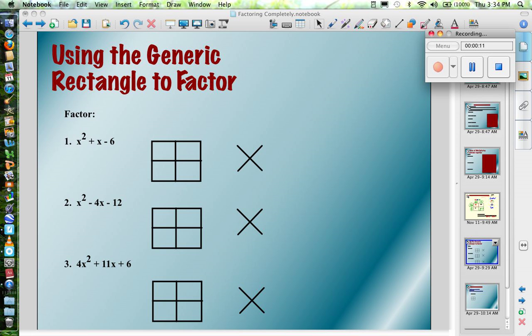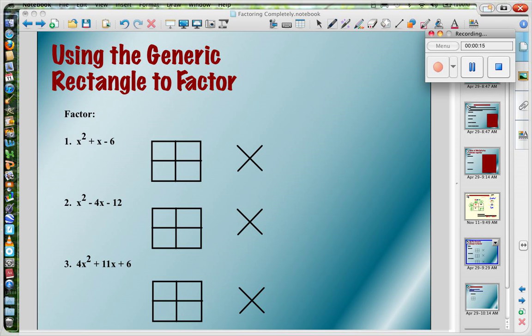my goal is to come up with two binomial factors together. So first term goes in the first box, last term goes in the last box, and my middle term is my product. So that's 1x. The product of x squared and negative 6 is negative 6x squared.